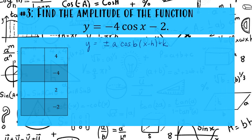Number three: find the amplitude of the function y equals negative four cosine of x minus two. So what we know is we know that a is our amplitude, but when you're doing this, when you're looking at it, make sure you're always taking the absolute value of a.